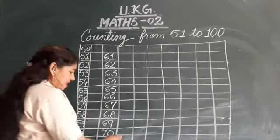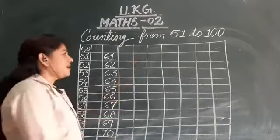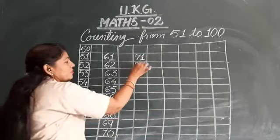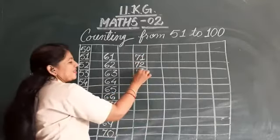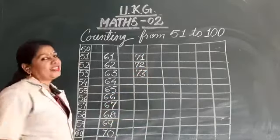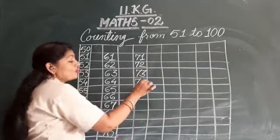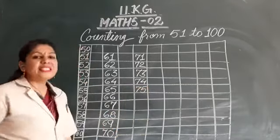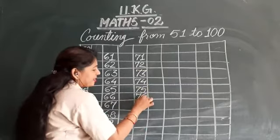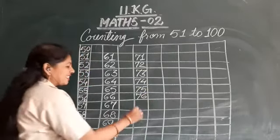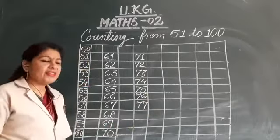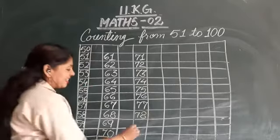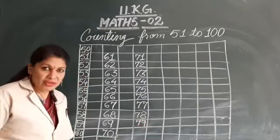Then we will leave this line and we will start from next line. 71. 72. 73. 74. 75. 76. 77. 78. 79.